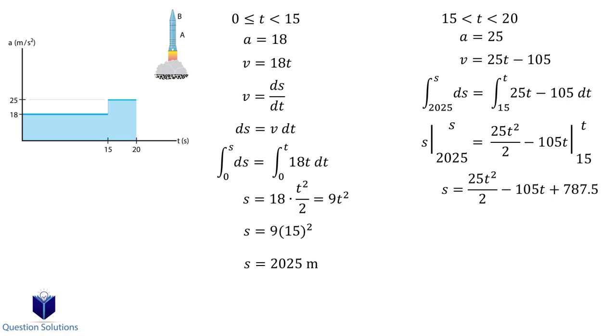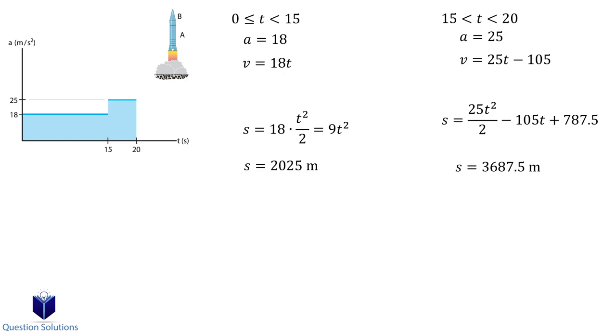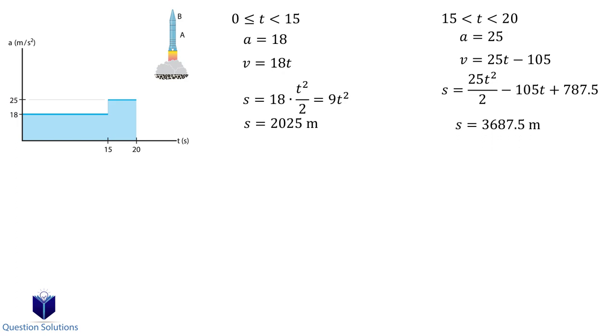To make it easier for us to draw our graph, let's find the displacement at 20 seconds, which is 3687.5 meters. The graph looks like this.